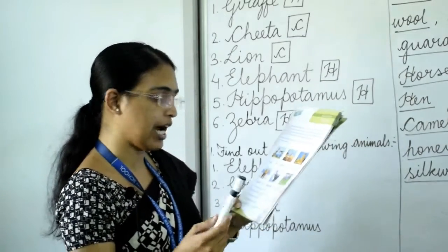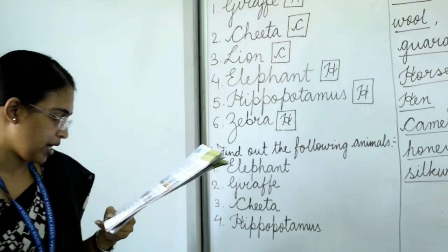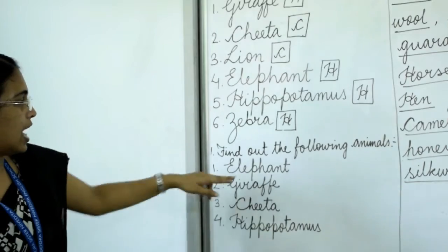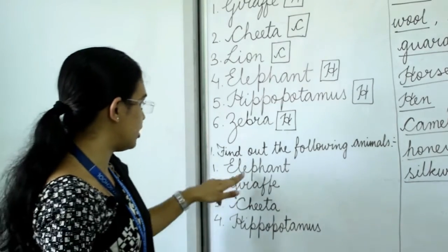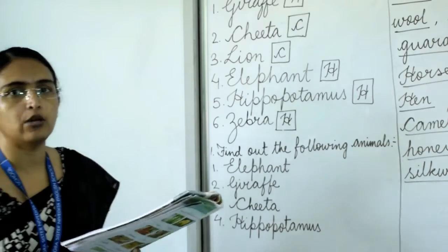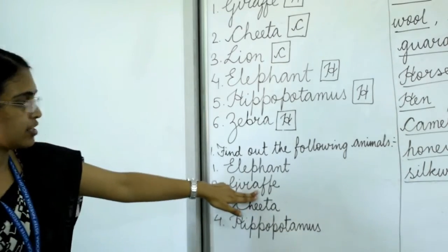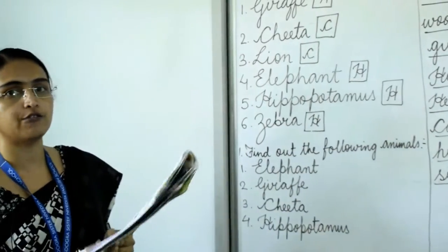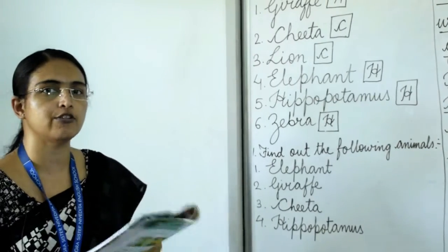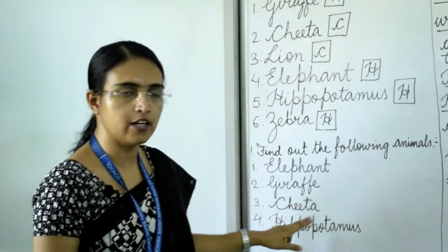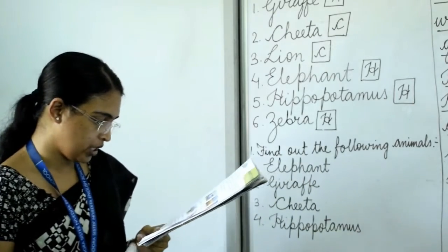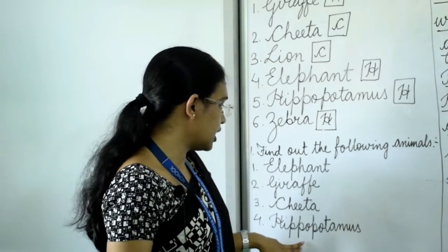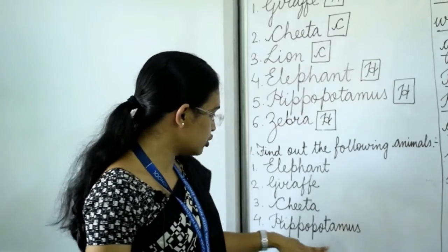Next question: find out the following animals. Number one — the largest land animal is elephant. Number two — the tallest animal is giraffe. Number three — the fastest animal on land, which can run very fast, is cheetah. Write the spelling of cheetah. Number four — the animal known as the water horse is hippopotamus, so write hippopotamus in the dash.